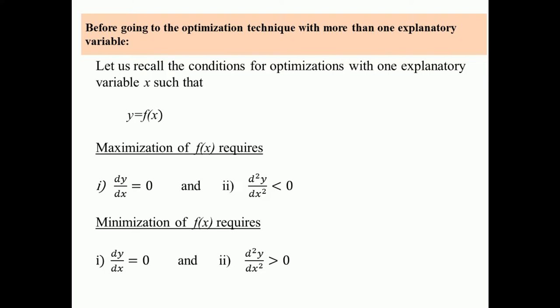On the other hand, for minimization of the function y = f(x), it requires the necessary condition dy/dx = 0, and the sufficient condition d²y/dx² must be positive or greater than 0. I request you to watch my previous video to know the optimization technique with one explanatory variable in detail.